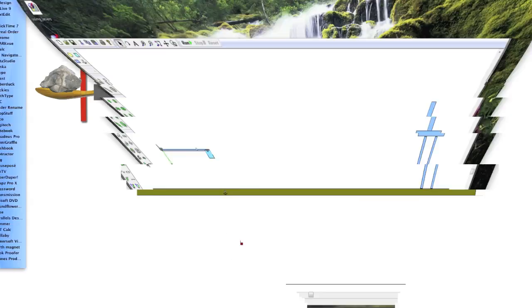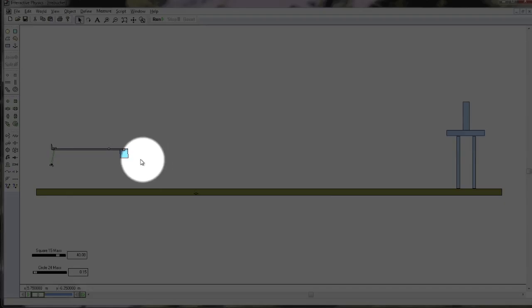So let's see the trebuchet in action. Here we have a trebuchet all set up, and right here we have our heavy mass that's going to provide our effort force. In the middle is our pivot point where our fulcrum is, and at the other end we have our sling with our rock, and over here we have a castle that we're going to lay siege to.